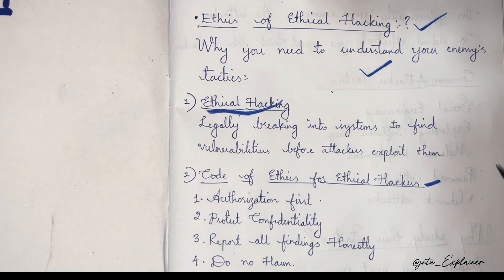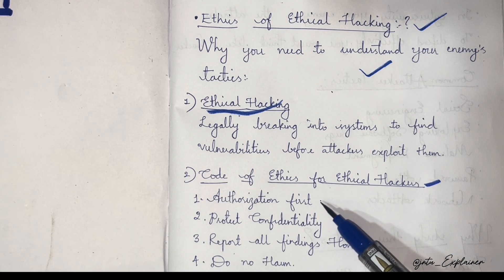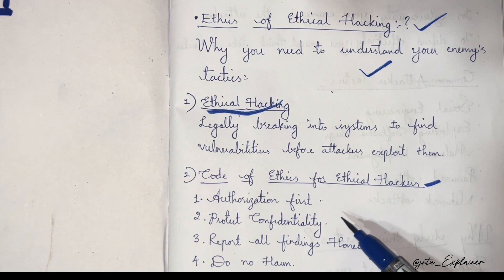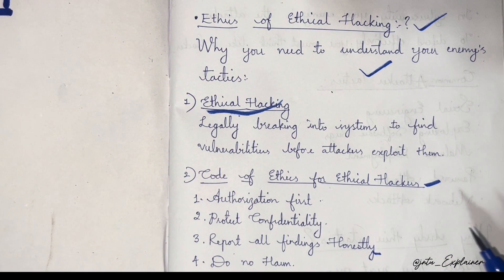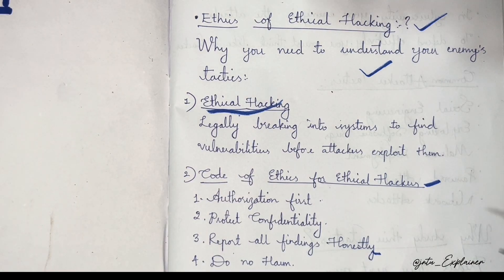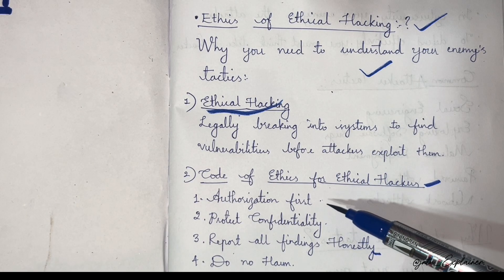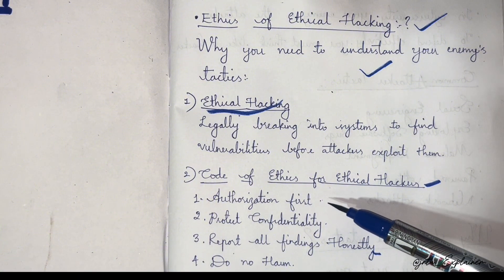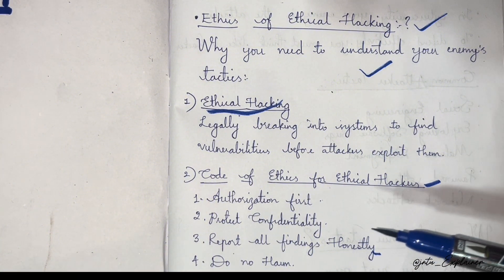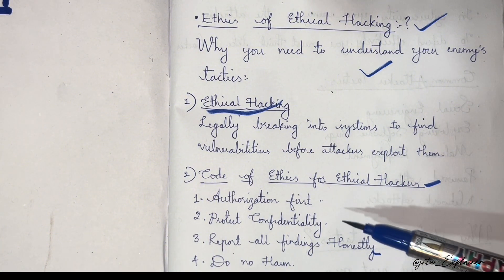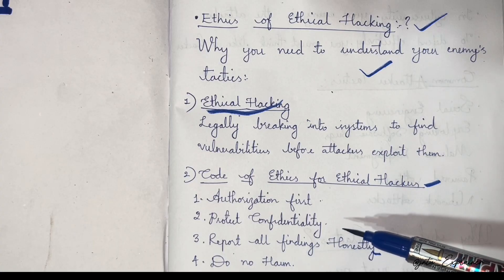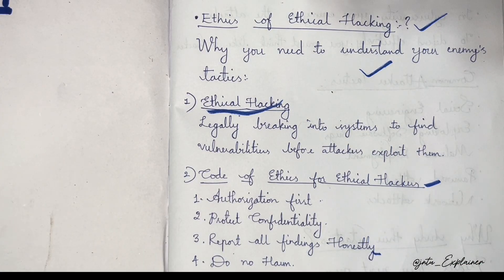Now let's discuss the code of ethics for an ethical hacker. There are four principles: authorization, protect confidentiality, report all findings honestly, and do not harm. An ethical hacker must first have authorization — they must break into systems only with proper permissions.